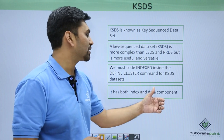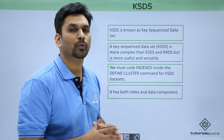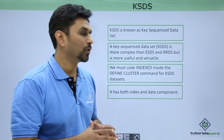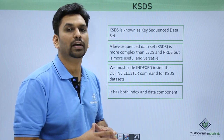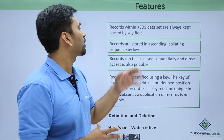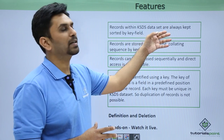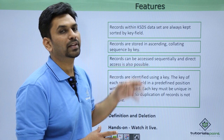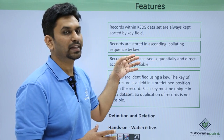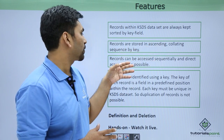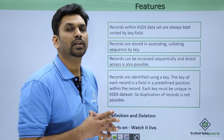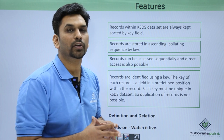A KSDS data set has both an index component and a data component. In the index component we have the index part which points to the actual record, and in the data component we have the actual data. Records within KSDS data sets are always kept sorted by the key field, stored in ascending collating sequence by key. Records can be accessed sequentially and direct access is also possible.